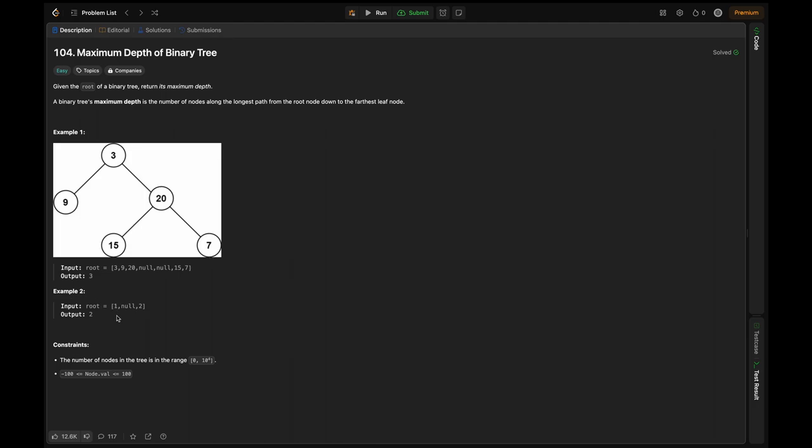In example 2, we can see that root is equal to 1, null, and 2. The root doesn't have a left node, it just has a right node. So here, the maximum depth is 2.